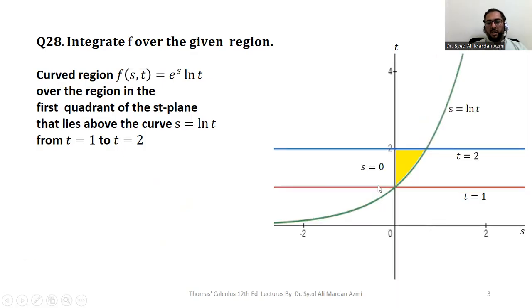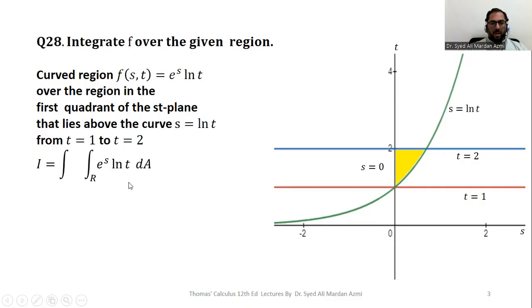After plotting the region of integration, we solve f(s, t) = e^s · ln(t) over this region. We set up the double integral: ∫∫ e^s · ln(t) dA. The next question is what dA will be, and which variable is inner and which is outer.